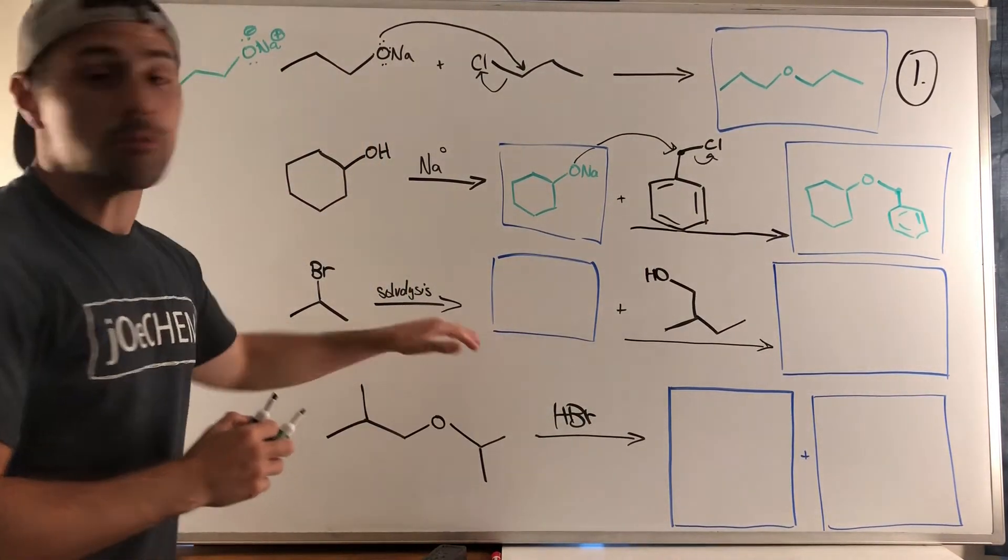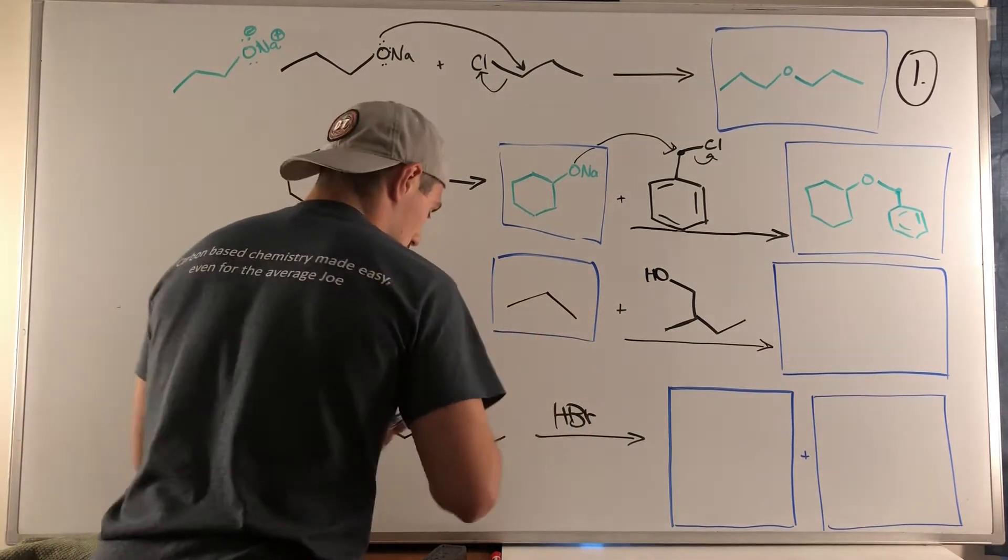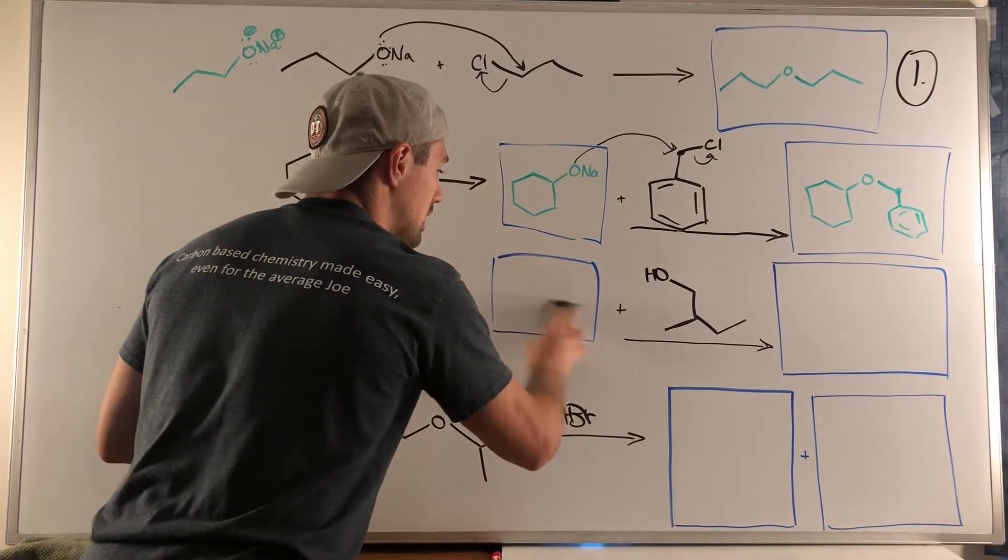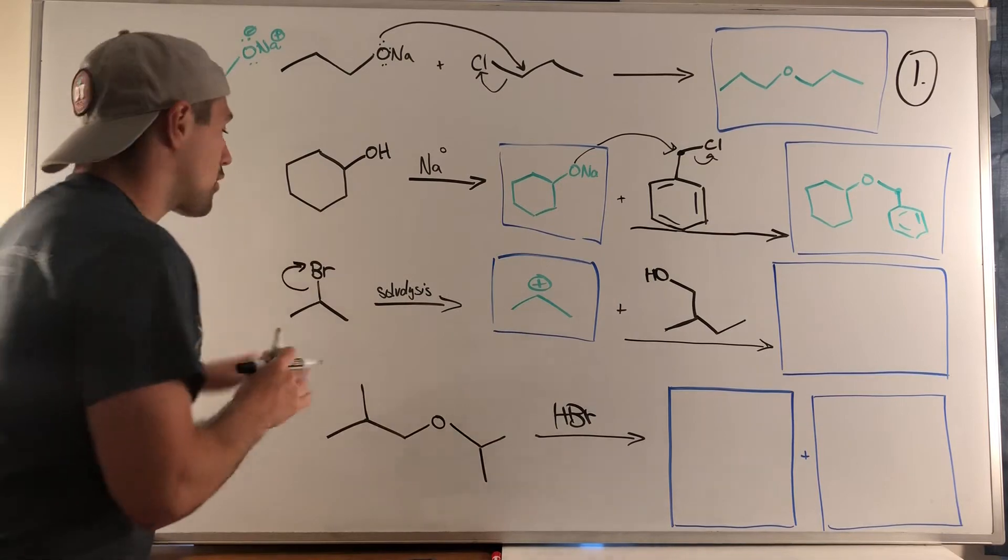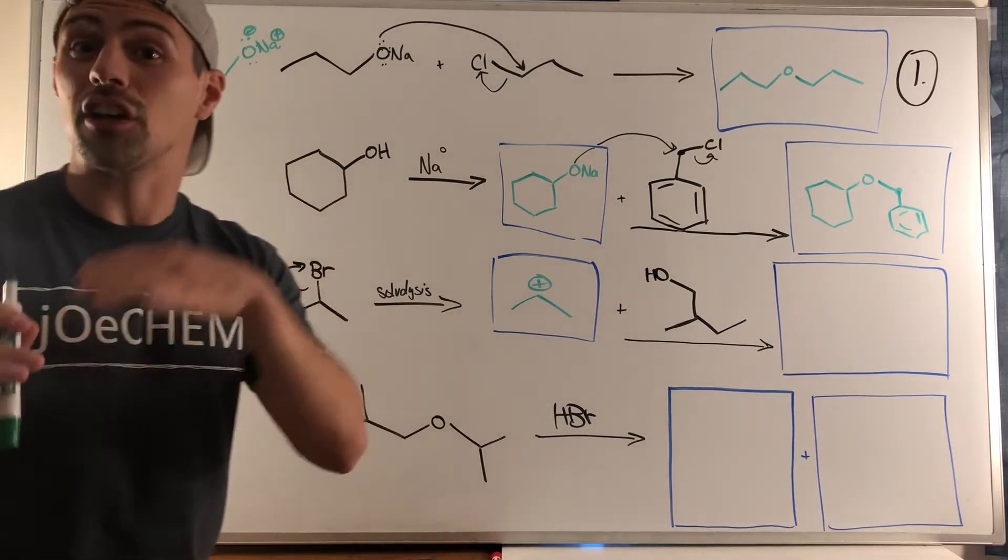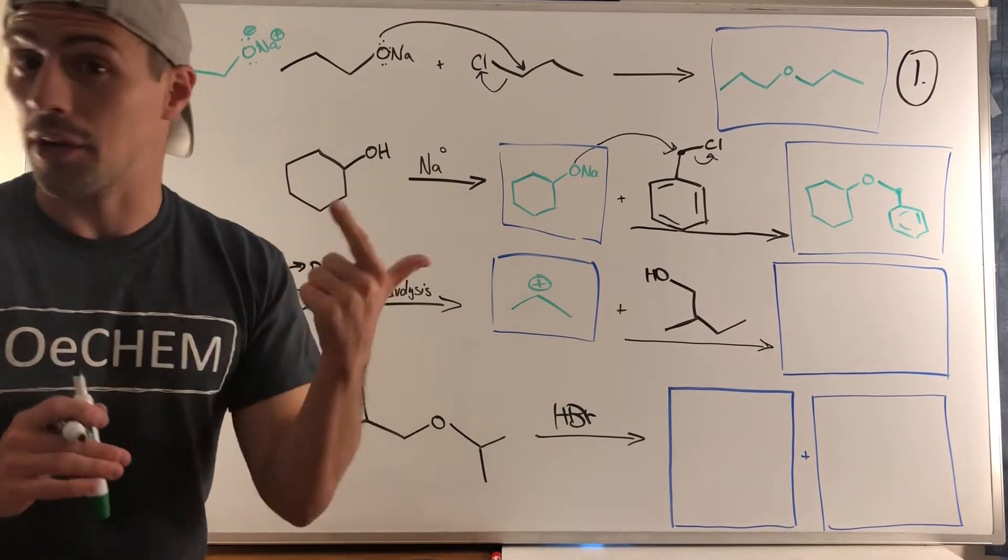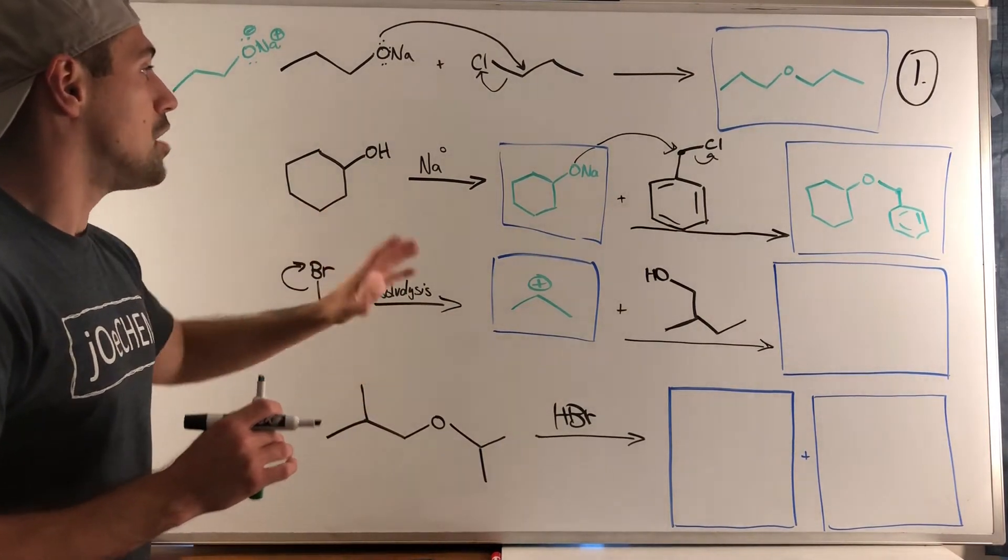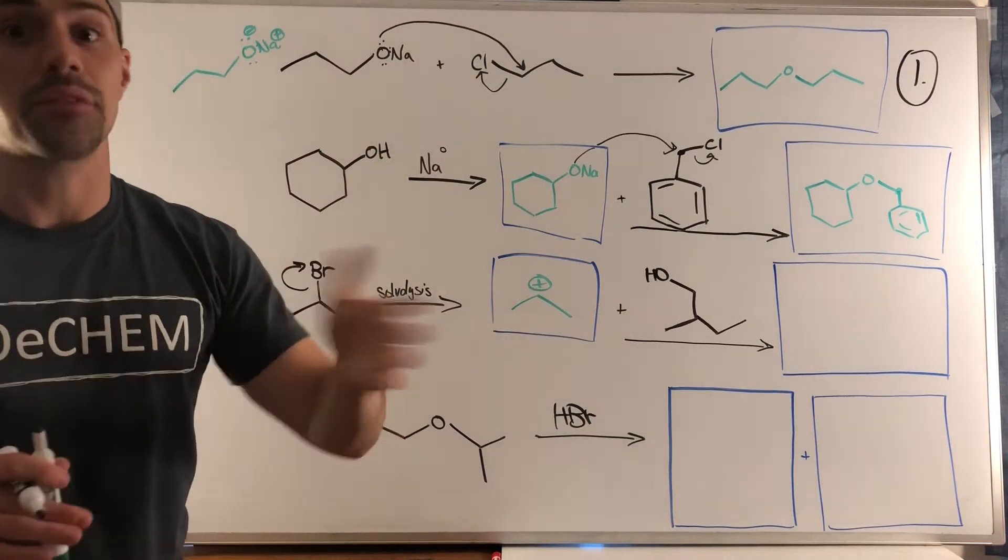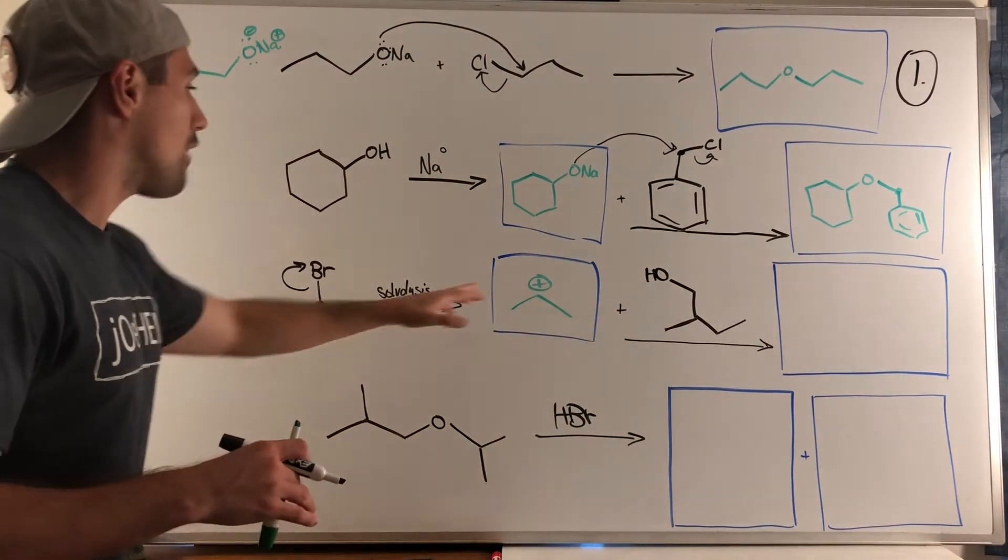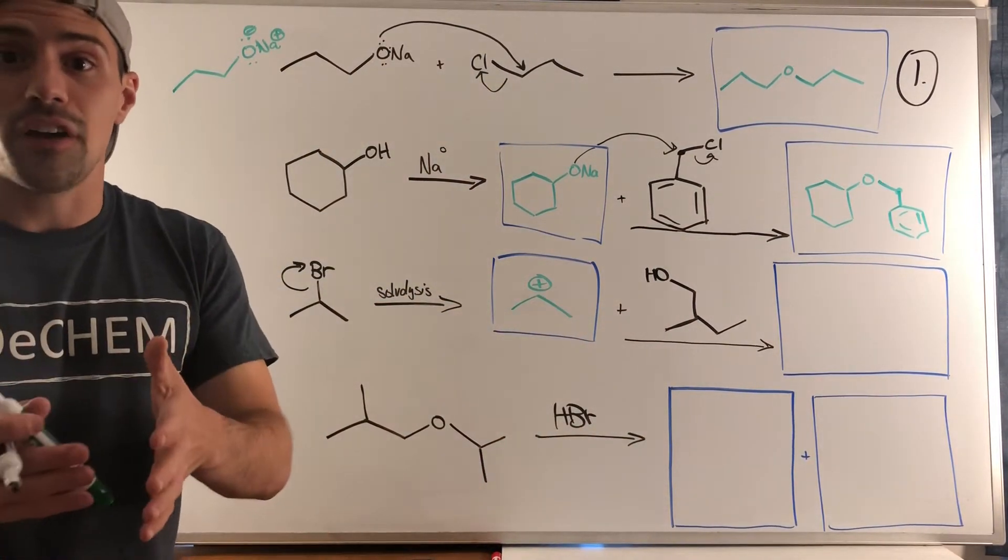Moving on, here we see a little splash of SN1 because we see solvolysis. Once bromine leaves like this, we have a carbocation. We have to check if there are any shifts. Luckily, no carbocation shifts, whether it be hydride or methyl, we're good to go. In these SN2 problems we have O minus, good nucleophile that can react on its own, but here we have a carbocation.